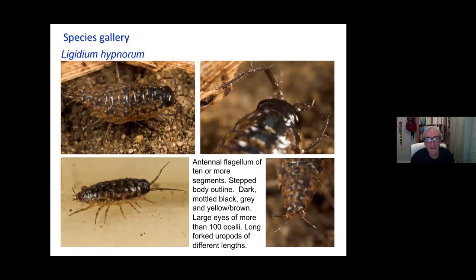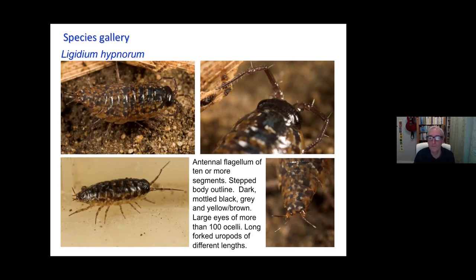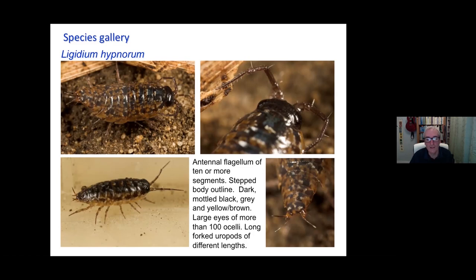Ligidium hypnorum has ten-ish even antennal flagellum segments. It's another really fast one — a definite runner. As you turn over a stone you really have to be rapid to grab this thing. It has forked uropods at the end but one is a bit shorter than the other, so they're not as obviously equal as in Ligia. It's also quite attractively coloured with mottled patterns, and again has sort of compound eyes. These are the sort of things that will run away from you quite rapidly and are found in more coastal or damp environments.